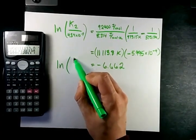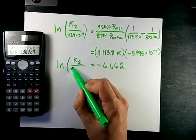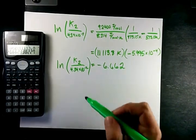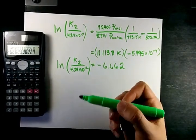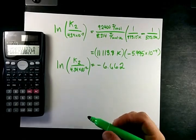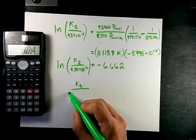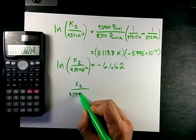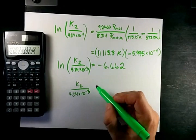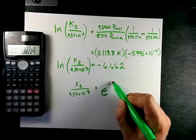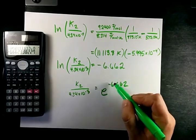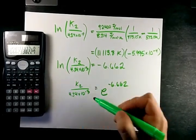All right, so I'm left here with the natural log of K2 over 4.34 times 10 to the negative 3 equals that. The question I have for you, or for myself, is how do I undo ln on this side? Because I need to solve for K2. The answer to that is that I can get rid of ln on this side by taking e to the power of this other side here. e to the negative right side undoes ln on my left side.